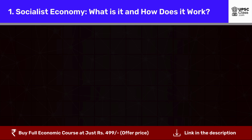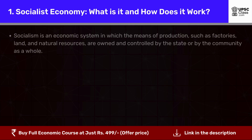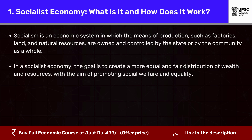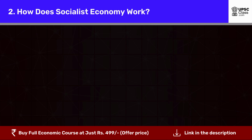Socialist economy: what is it and how does it work? Socialism is an economic system in which the means of production, such as factories, land and natural resources, are owned and controlled by the state or by the community as a whole. In a socialist economy, the goal is to create a more equal and fair distribution of wealth and resources, with the aim of promoting social welfare and equality.